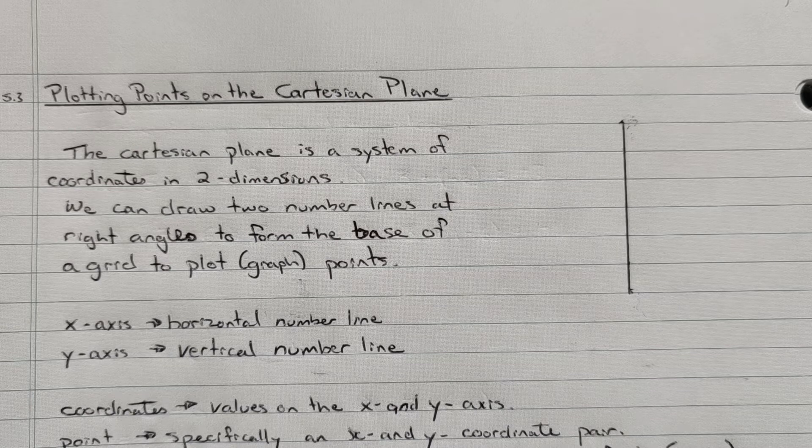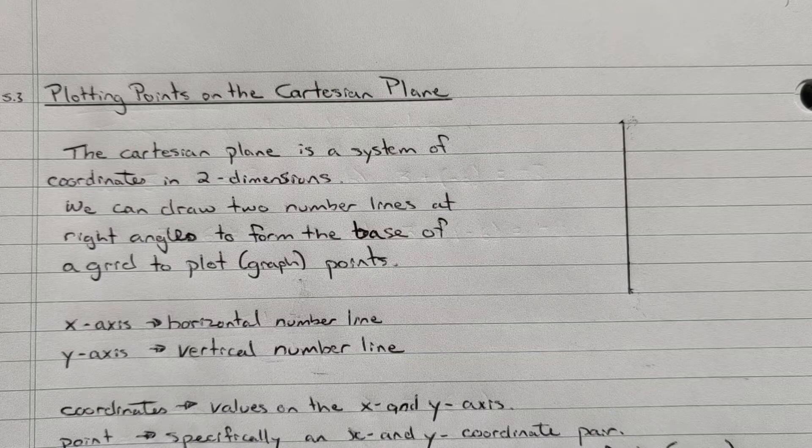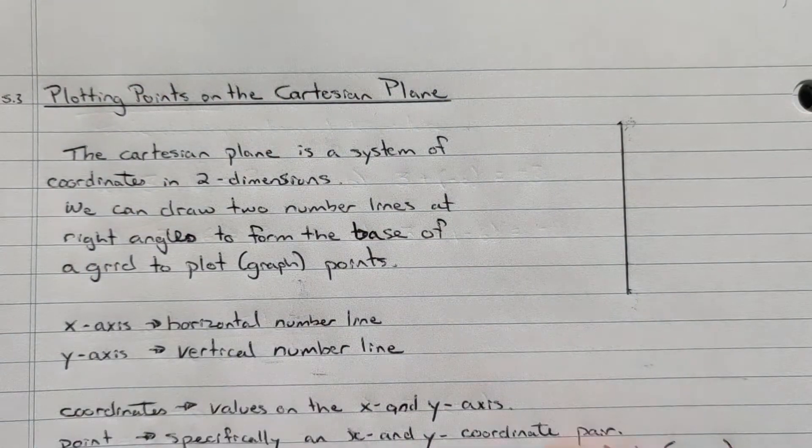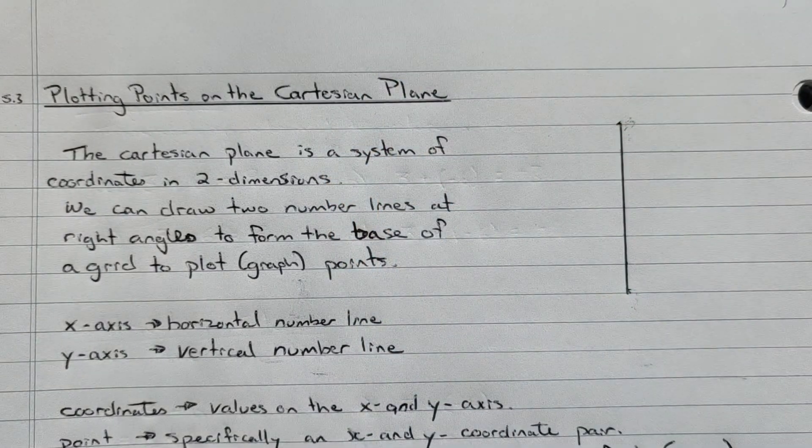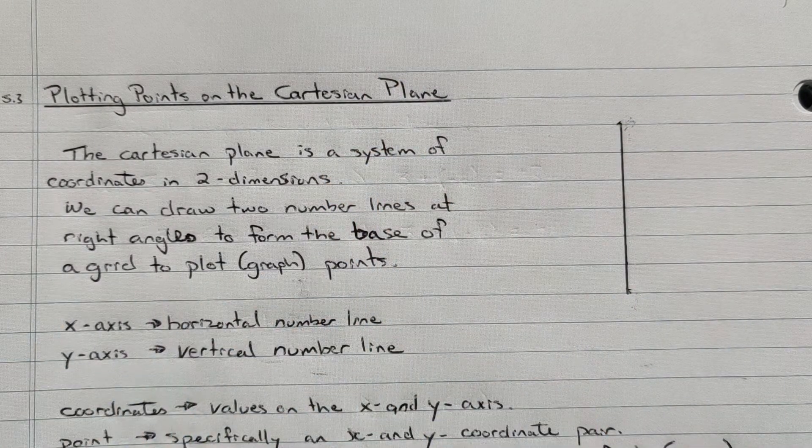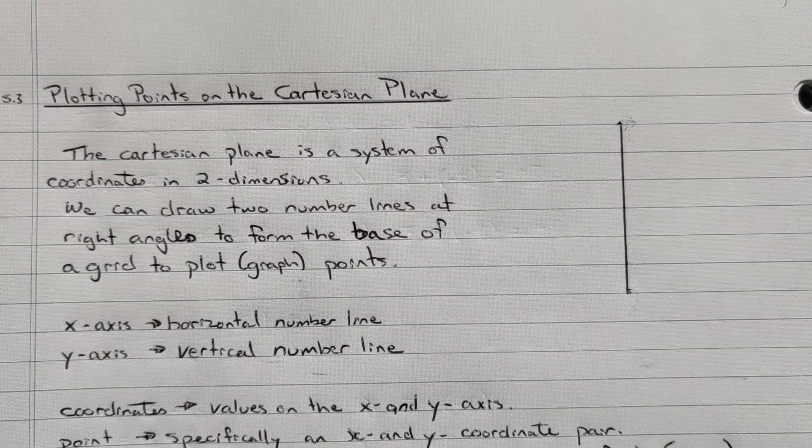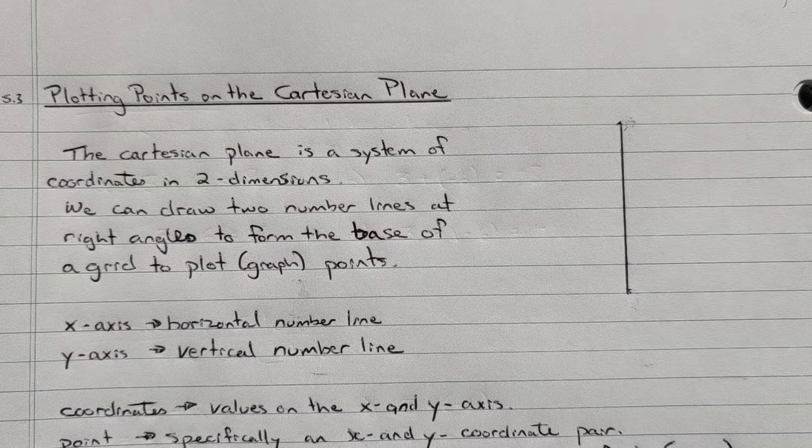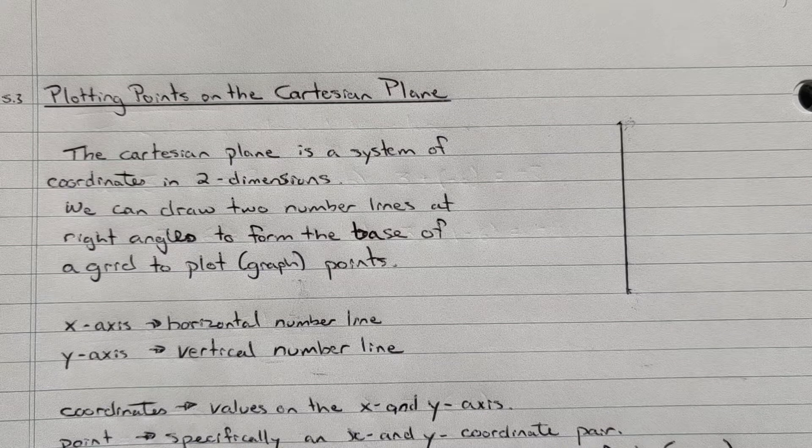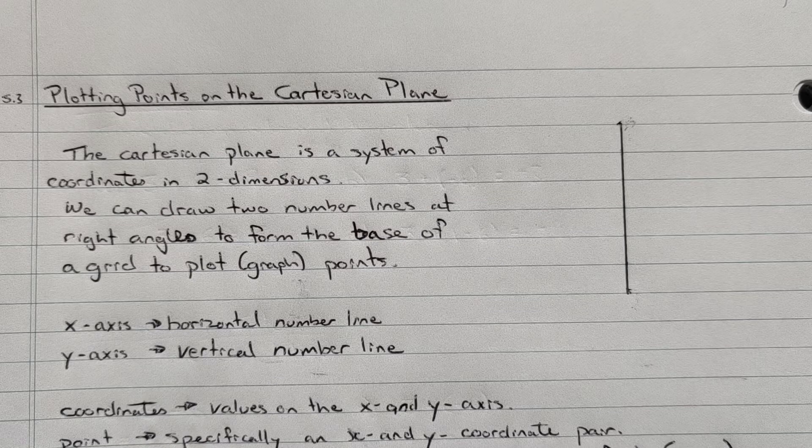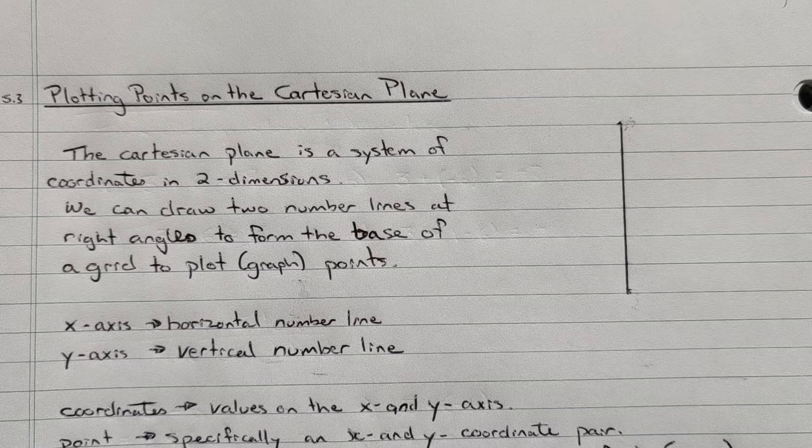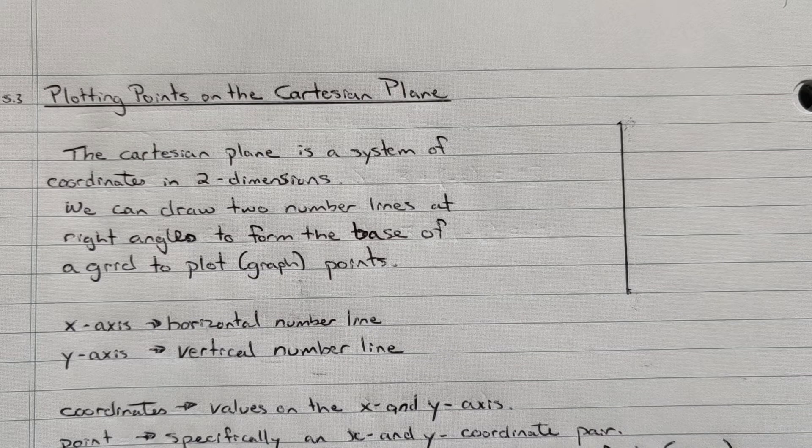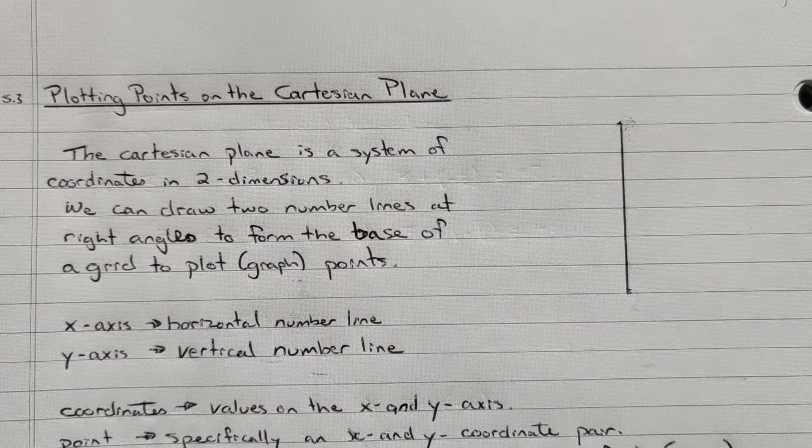But the idea here is that a Cartesian plane is two dimensions. So anything on this piece of paper here, this is two dimensions. My hand coming off the paper, that's going into three dimensions, so we're only worried about things in two dimensions in the case of a Cartesian plane. What we do when we're representing points on a Cartesian plane is that we draw two number lines at right angles, generally one horizontal and one vertical, to create a grid base or a graph where we can plot some points or graph some points.